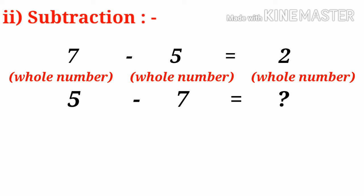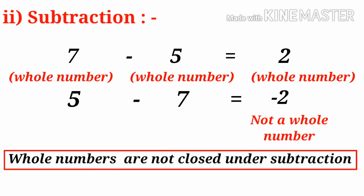After some chapters, we can do this. The result is minus 2. But minus 2 is not the family member of Whole Numbers. It is not a Whole Number. So, Whole Numbers are not closed under subtraction.